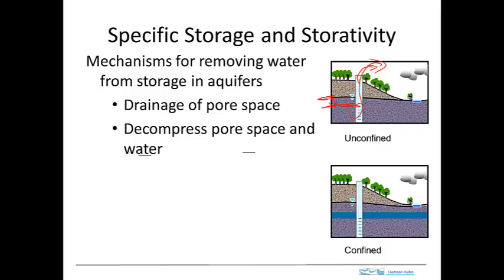In a confined aquifer, where we have a layer assumed to be of low permeability, when we pump water out of the well we assume there's essentially no change in the water table. Instead, the pressure changes in the confined aquifer, and that pressure change is what causes the ability to remove water. As we drop the pressure, the water will expand and the aquifer material will contract, and as a result the aquifer will store less water than it used to — that's the water we've pumped out.